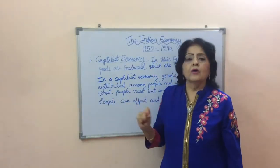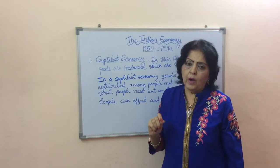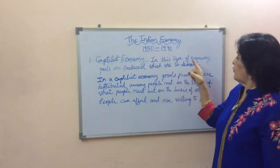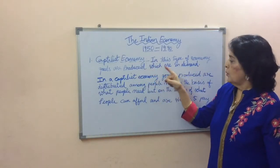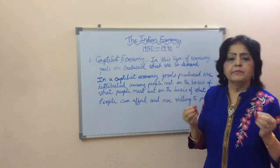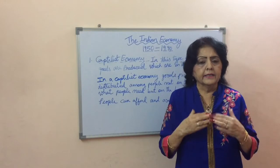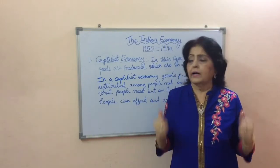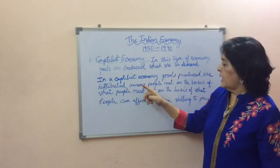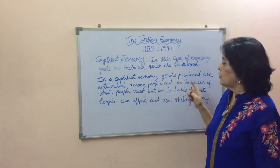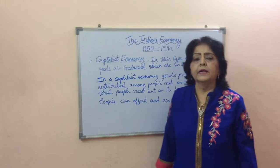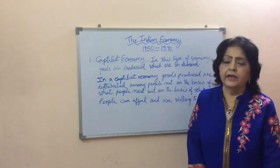The first is the capitalist economy. In this type of economy, goods are produced which are in demand — that is, goods which can be sold profitably in the domestic and foreign market. In a capitalist economy, goods produced are distributed among people not on the basis of what people need, but on the basis of what people can afford and are willing to pay.